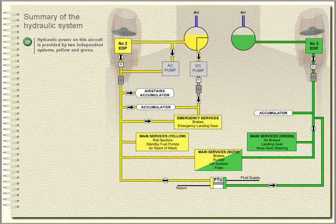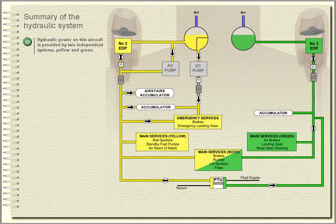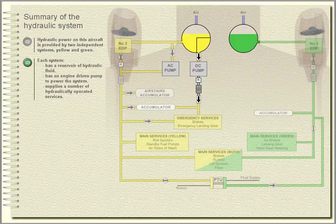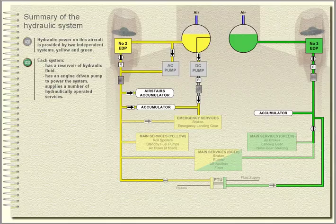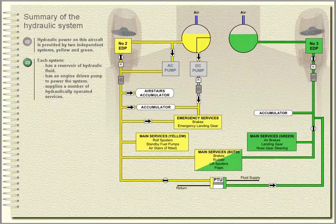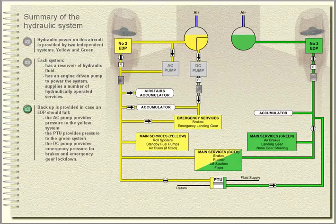Summary of the hydraulic system. Hydraulic power on this aircraft is provided by two independent systems, yellow and green. Each system has a reservoir of hydraulic fluid, an engine-driven pump to power the system, and supplies a number of hydraulically operated services. Backup is provided in case an EDP should fail.